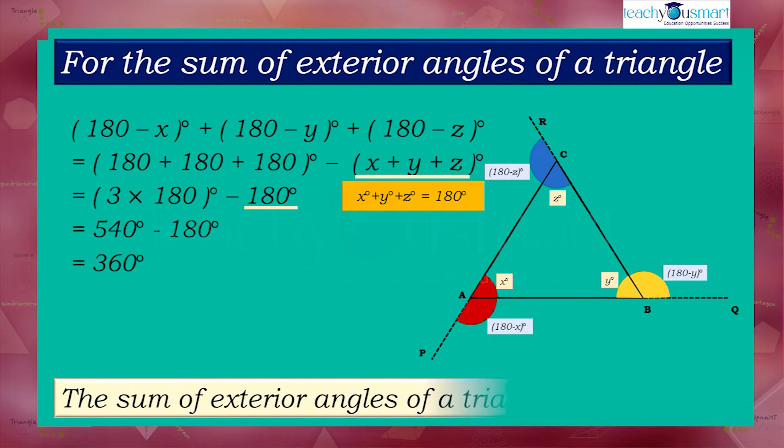That is, the sum of exterior angles of a triangle is 360 degrees.